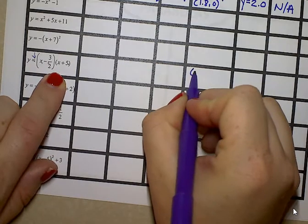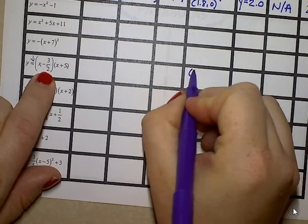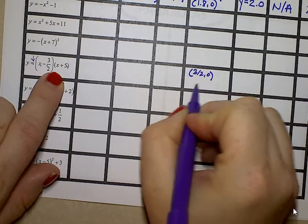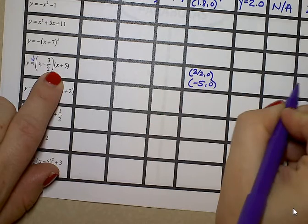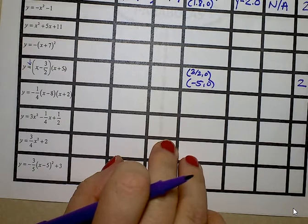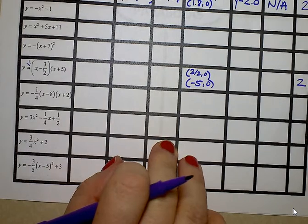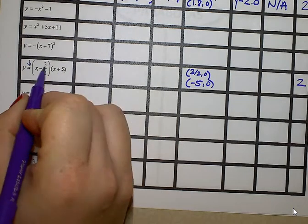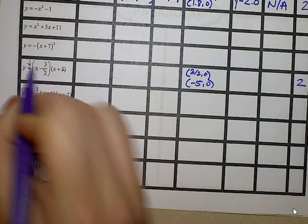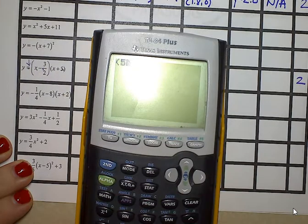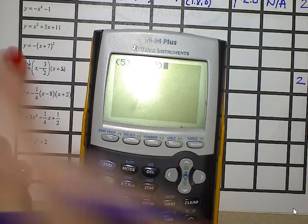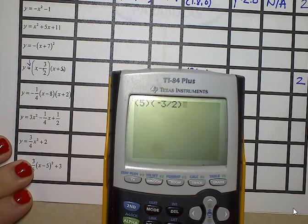I know that one of the x-intercepts is — remember it's the opposite sign here — so 3/2, 0 is one, and negative 5, 0 is the other. There are two of them. I can also tell what the y-intercept is by multiplying these three numbers. So let's clear the calculator and multiply those — it's 5 times negative 3/2. Remember the negative is below the 3, and there's a 1 out front that's hiding, but when you multiply it by 1 it won't change the value. So the y-intercept answer is negative 7.5.